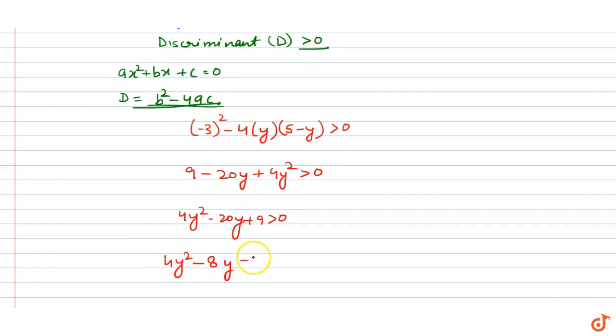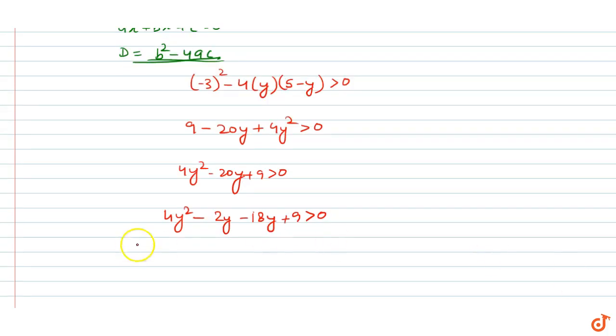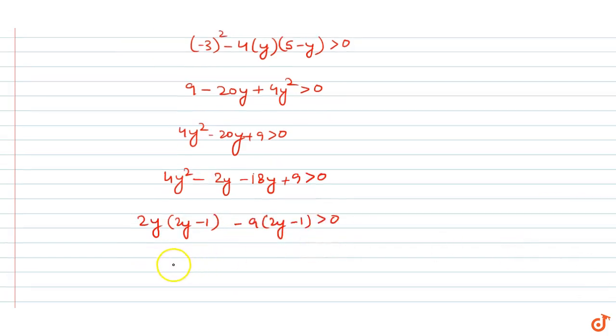Factoring this: 4y² - 2y - 18y + 9 > 0. Taking common terms: 2y(2y - 1) - 9(2y - 1) > 0, which gives us (2y - 1)(2y - 9) > 0.